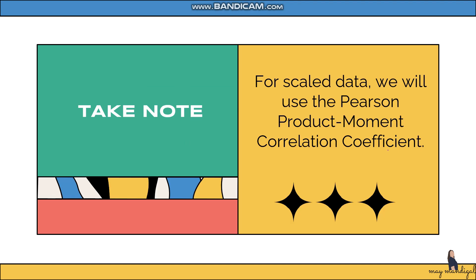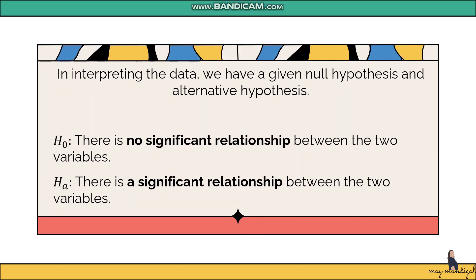One thing to take note is that we can only use the Pearson product-moment correlation coefficient if we have scaled data, specifically interval or ratio level data. If one of your variables is nominal data, you cannot use the Pearson product-moment correlation coefficient and must use a different method for identifying correlation.